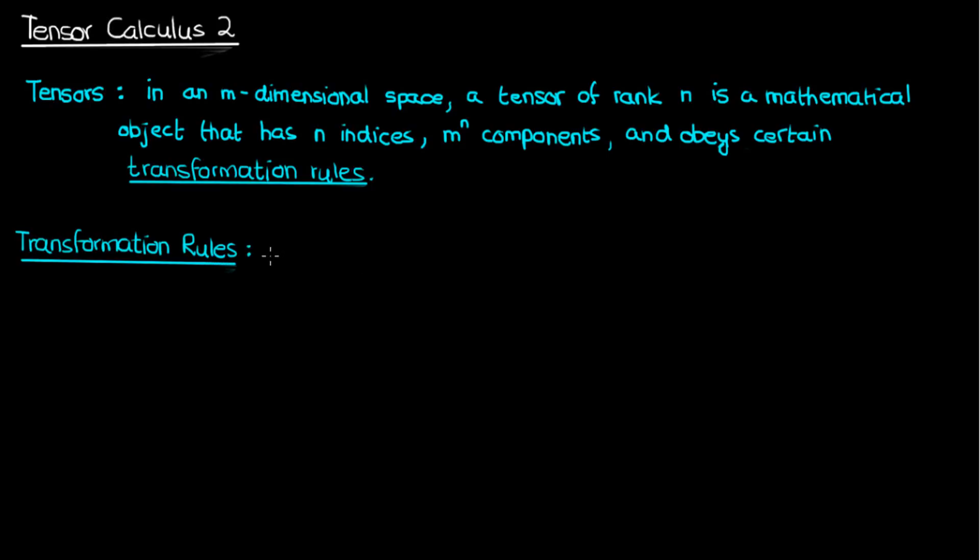Now there's actually two ways to describe the transformation rules of tensors. The first way is probably the most famous one that physicists love to use, which says that a tensor is a mathematical object that transforms like a tensor.